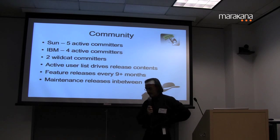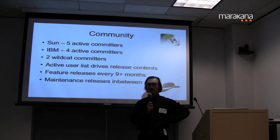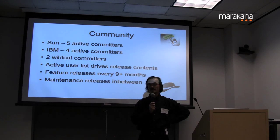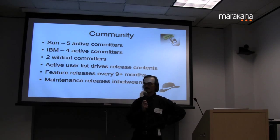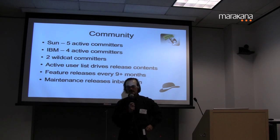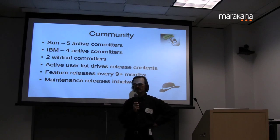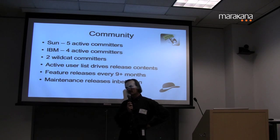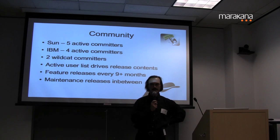Let me tell you a little something about the community. There are five of us from Sun who are active committers working on the project right now, four committers from IBM, and two independent committers out in the community, plus a very active user list. The user list is what really drives our feature set from release to release — this is very much a community-driven feature set. We solicit input from our user community, who can vote for features they want. We turn out feature releases about once every nine months to a year, with maintenance releases in between bundling bug fixes and message localizations.